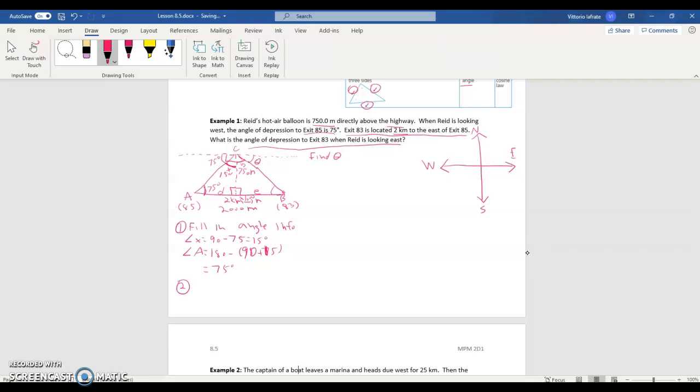If I want to find D, I can use one of my primary trig ratios, my TOA. Tan of 75 is equal to the opposite over the adjacent, 750 over D. D tan 75 is equal to 750. Divide everything by tan 75. We get D is equal to, make sure you're in degrees, 750 divided by tan 75 is 200.96 meters.